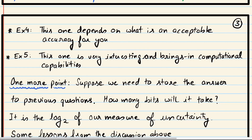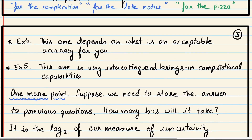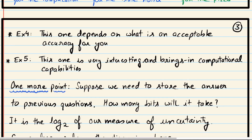One more point: until now we were measuring uncertainty as the number of possible values. But suppose we need to store the answer — how many bits will it take? We look at the number of possible answers and take the log base 2 of that. So log base 2 of the number of possible answers is the number of bits needed to store the answer. Instead of using cardinality alone, if we want to measure uncertainty in bits, the log base 2 of cardinality is the measure. Later in this course we will see why the log of cardinality makes more sense.